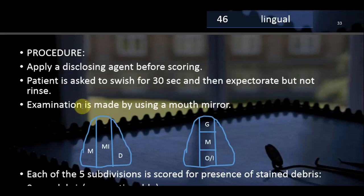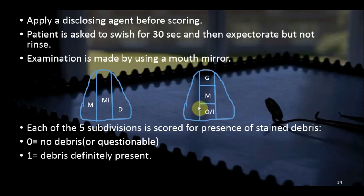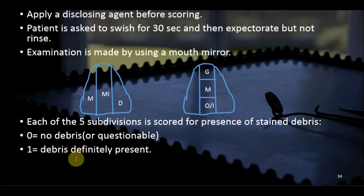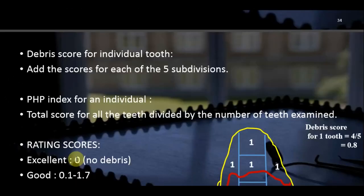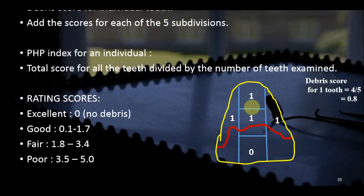Examination is made using a mouth mirror. The tooth surface is divided into five subdivisions: mesial one-third, distal one-third, and the middle one-third is further divided into gingival, middle, and occlusal or incisal portions — giving five total subdivisions. Scoring options are either zero (no debris) or one (debris present).